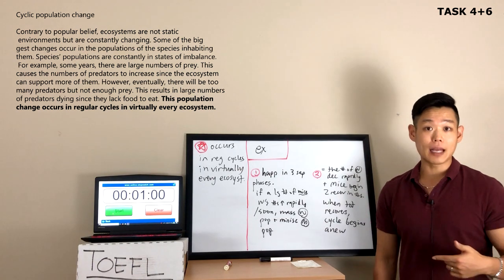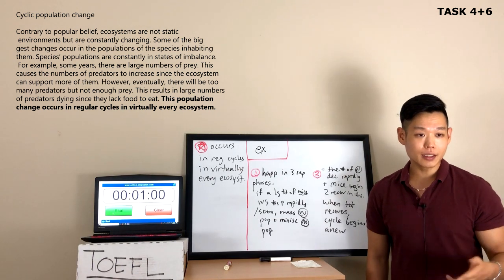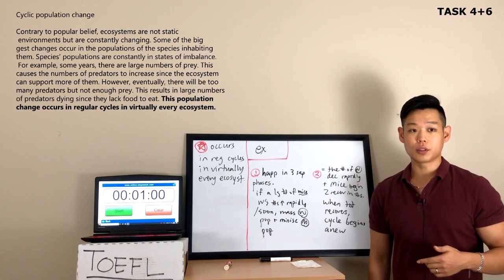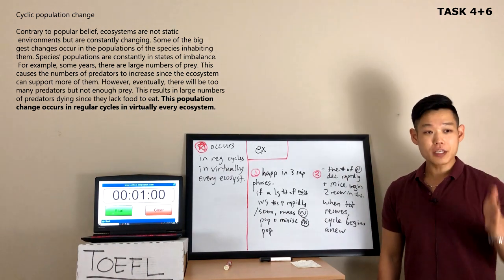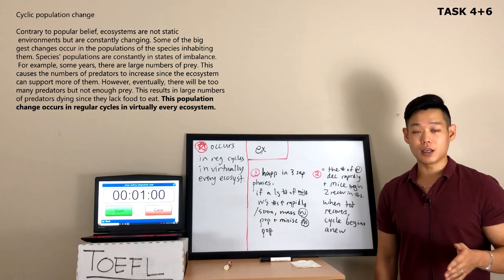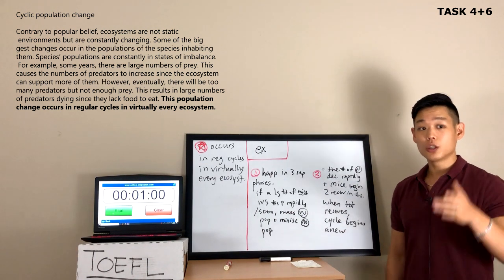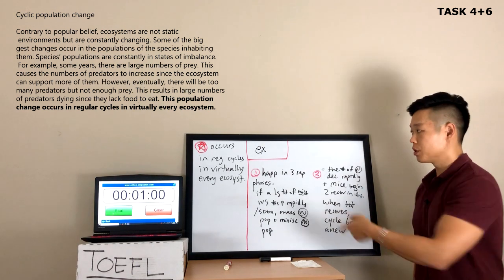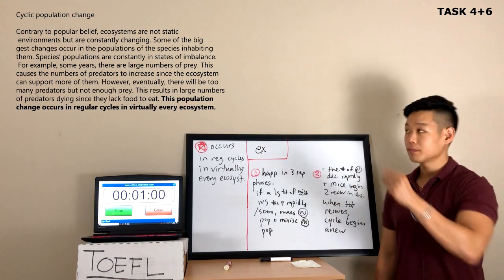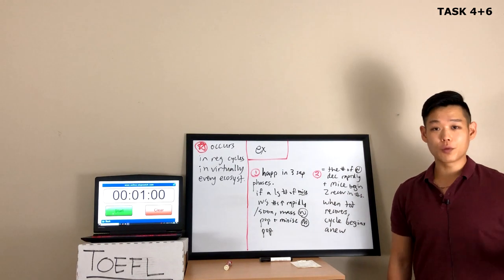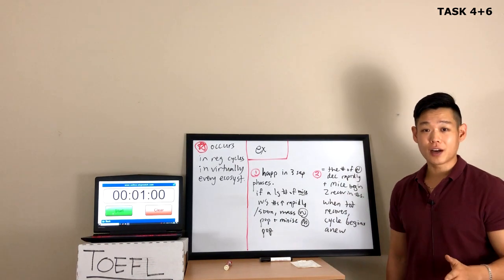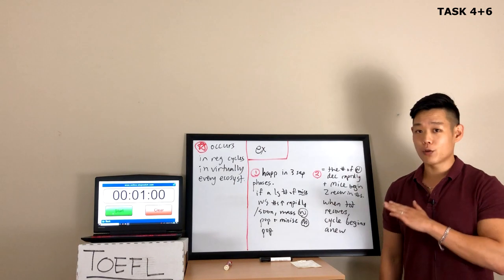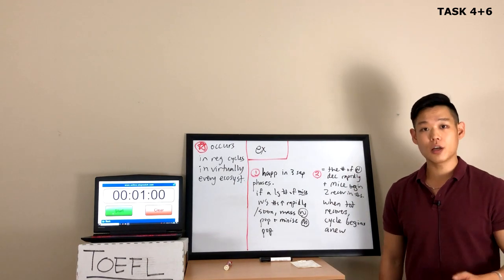So let's skip to the last sentence. The last sentence says: this population change occurs in regular cycles in virtually every ecosystem. This population change is most likely going to be cyclic population change. So copy from 'occurs' to 'ecosystem,' which is what I did. Now we're done with the reading passage because all we need to find is the definition. And as long as the definition doesn't have any grammar mistakes or misunderstandings, you're good to go.